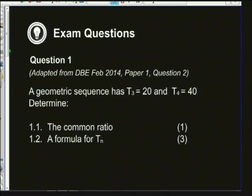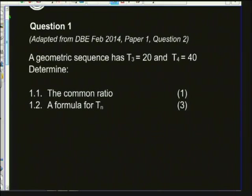We've taken question one from a past paper. A geometric sequence has T3, the third term, equal to 20 and T4, the fourth term, equal to 40. Question 1.1: determine the common ratio. You shouldn't be surprised they're asking for the common ratio and not the common difference — because it's a geometric sequence, you are multiplying by a constant amount each time.